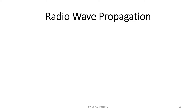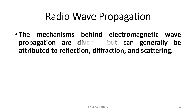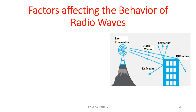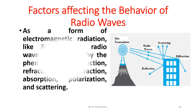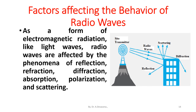Radio wave propagation. The mechanisms behind electromagnetic wave propagation are diverse but can generally be attributed to reflection, diffraction, and scattering. Factors affecting the behavior of radio waves: as a form of electromagnetic radiation like light waves, radio waves are affected by the phenomena of reflection, refraction, diffraction, absorption, polarization, and scattering.